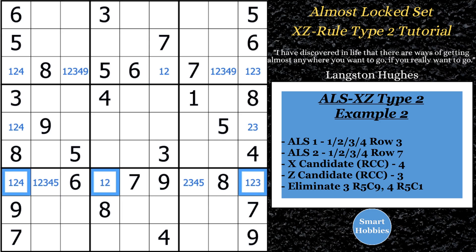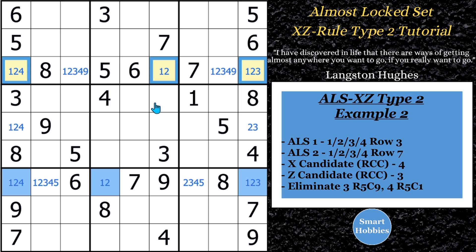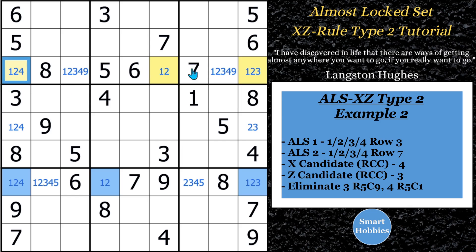Let's look at the blue almost locked set first. It has candidates one, two, three, and four in three cells along row seven — that's an almost locked set. Now looking up at row three, there's also one, two, three, and four in three cells — another almost locked set. The restricted common candidates: the fours are limited to column one — there are no other fours anywhere else in the almost locked sets — and the threes are limited to column nine, with no other threes elsewhere in the almost locked sets. So by the Type 2 rule, a four must be in one of these almost locked sets and a three must be in the other. We can eliminate fours and threes from anywhere else along columns one and nine respectively.